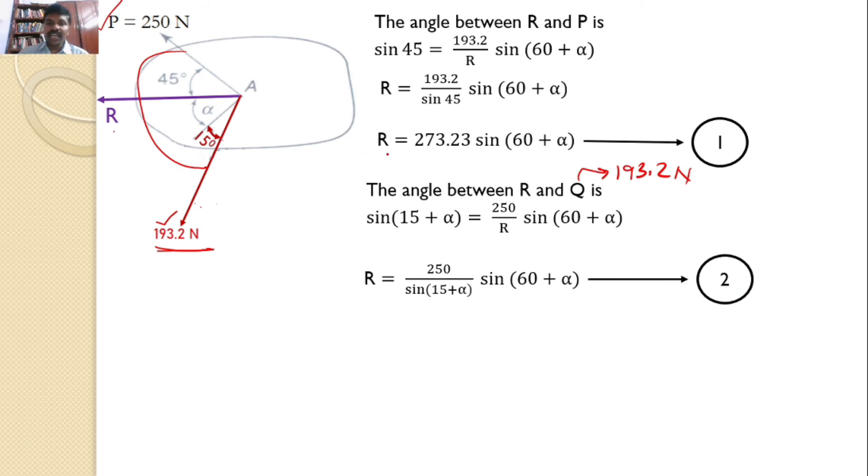Equation 1, I have one equation R equals so and so and for equation 2, I have another equation R equals so and so. By using the equations 1 and 2, I can write the equation as 273.23 into sin 60 plus alpha equals 250 by sin 15 plus alpha into sin 60 plus alpha.